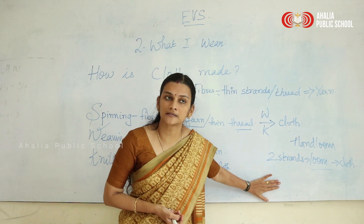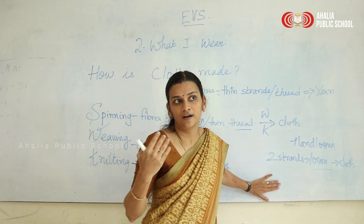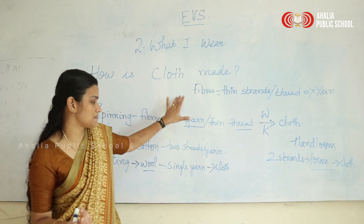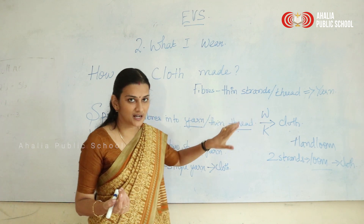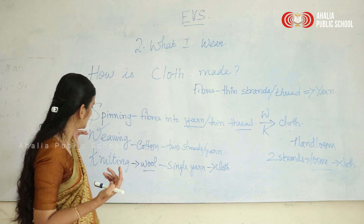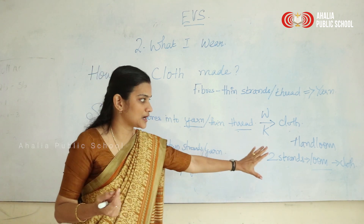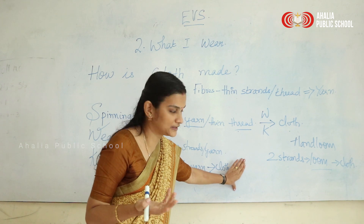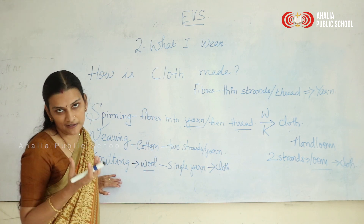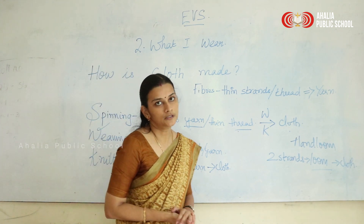Handmade knitted products are costly because they take more effort, time, and artistry — it can take two weeks or months. A machine can make around a hundred items in a single day. So cloth is made from fibers converted into yarn by spinning, then either woven using two strands in a loom or knitted using a single yarn with knitting needles or a knitting machine.